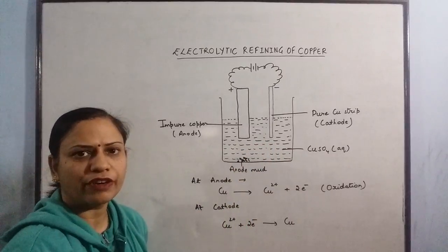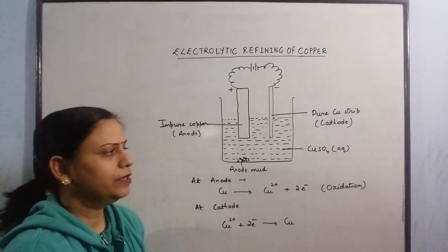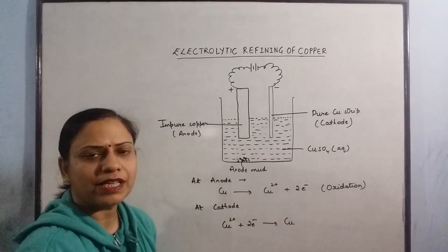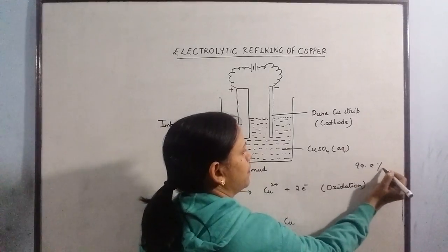This is how the electrolysis of copper or the electrolytic refining of copper is carried out. The copper that is obtained from this method is about 99.9% pure.